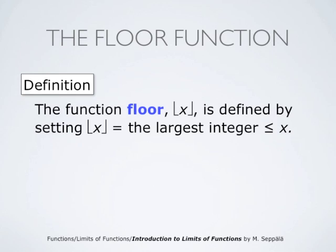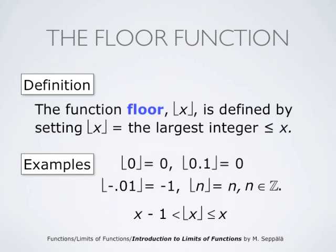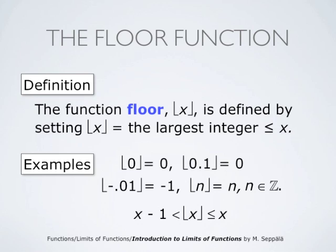The floor function is defined by setting its value at a point x to be the largest integer which is at most x. So floor of 0 is 0, floor of 0.1 is also 0, floor of negative 0.01 is minus 1, and floor of n for any integer n is that integer itself. The floor function satisfies: for any x, floor of x is larger than x minus 1 and is at most x. The graph of the floor function is a kind of staircase — between any two subsequent integer values the floor function takes a constant value, and at each integer value it jumps up by 1.